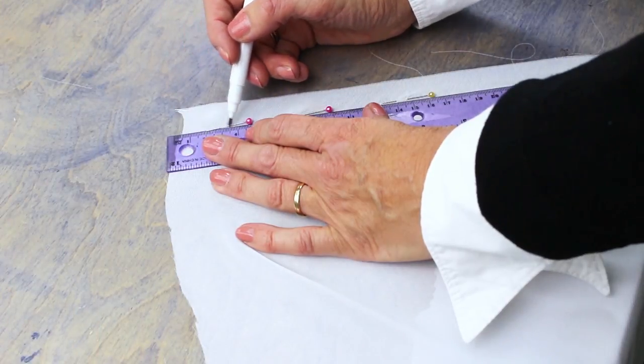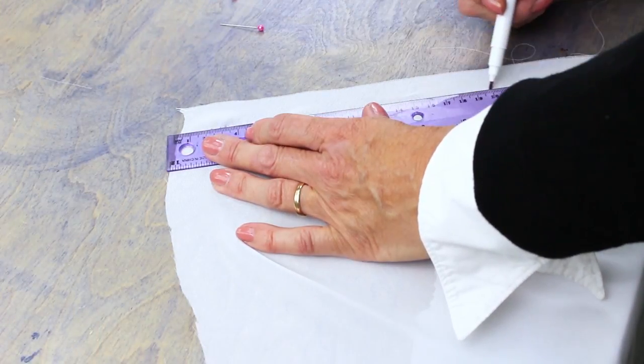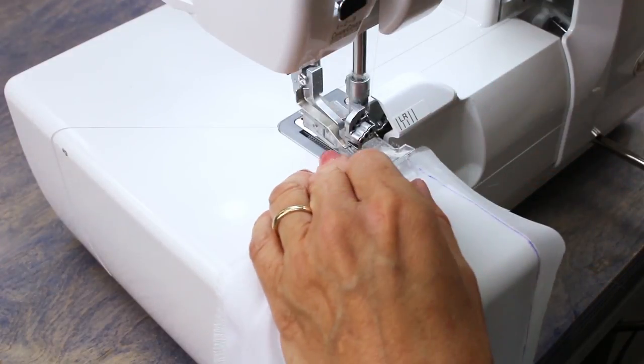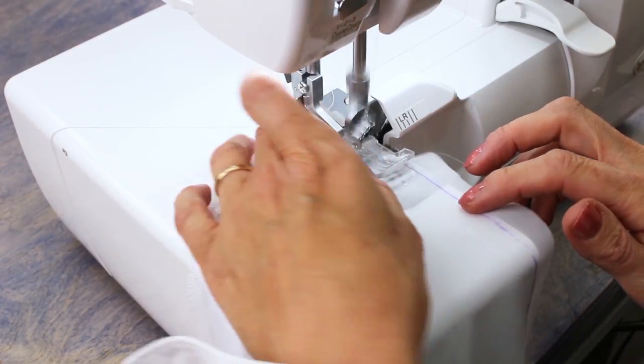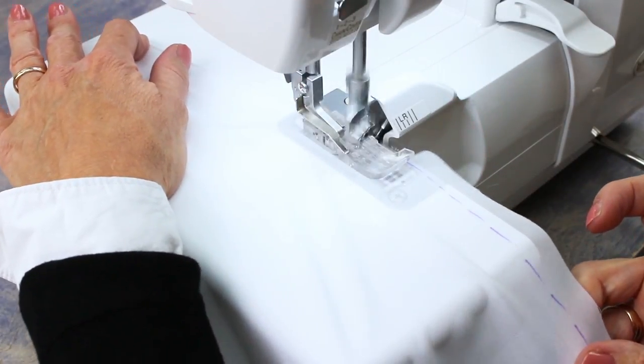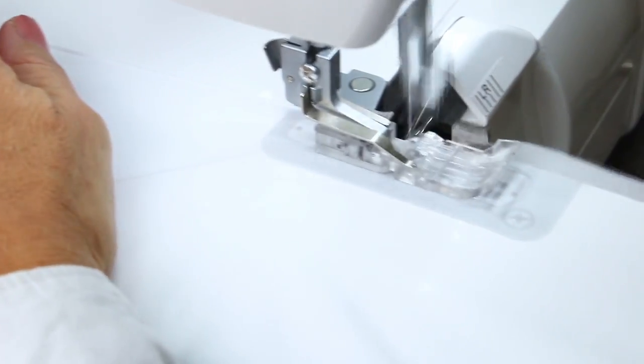Mark your hem with a disappearing marking pen and serge exactly along your marked line. This is the simplest method for a quick fine hem on chiffon or similar fine fabric.